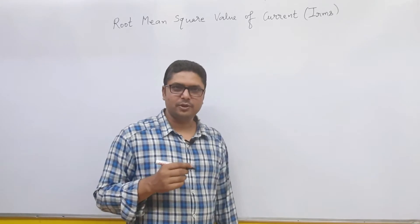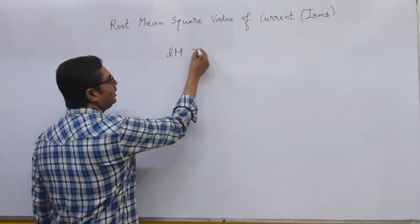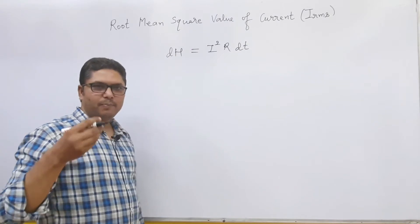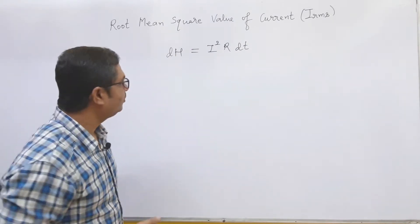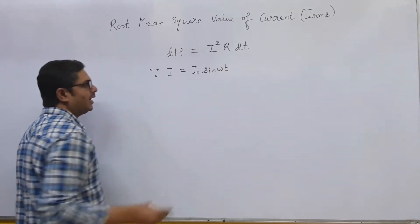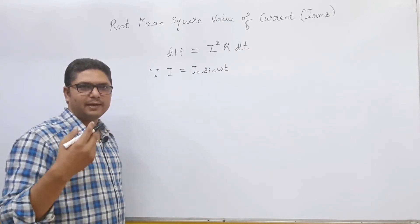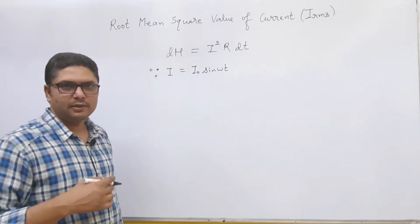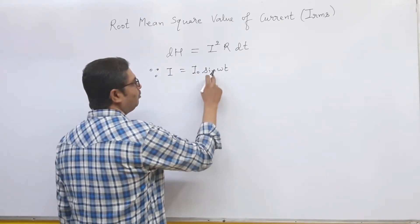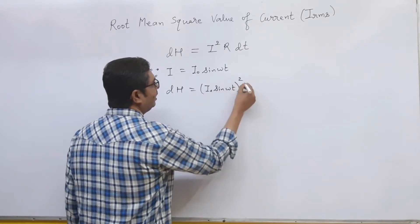So we are going to obtain the expression. According to Joule's law of heating effect, dH — the heat produced — is equal to i² R dt. This is the heat produced when current i passes through a resistor R for time interval dt. Now we know that i equals i₀ sin ωt. This is the expression of alternating current from the chapter of electromagnetic induction, topic of AC generator. Substituting, we get dH equals (i₀ sin ωt)² R dt.